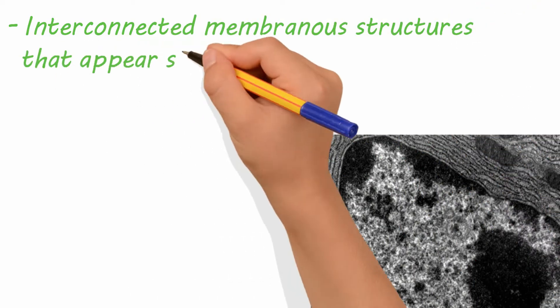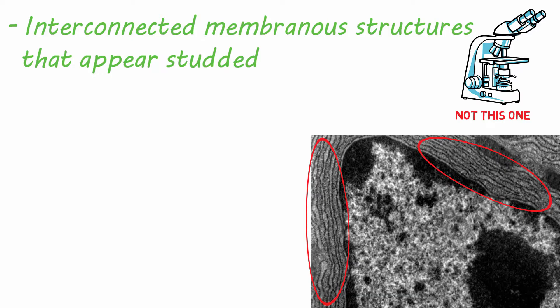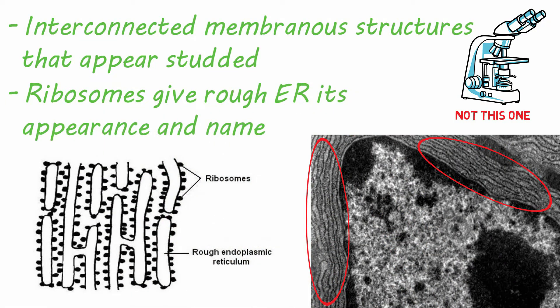The rough ER is a series of interconnected membranous structures that appear studded under powerful microscopes. These studs are actually ribosomes and give this portion of the ER its rough appearance and name.